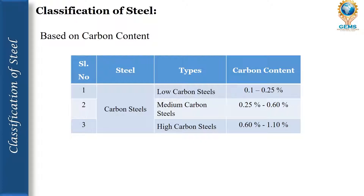Based on the carbon content present in iron, steels are divided into three types. If the carbon content lies between 0.1 to 0.25 percent, we call it low carbon steel. If it lies between 0.25 to 0.6 percent, we call it medium carbon steel. If it lies between 0.6 percent to 1.1 percent, we call it high carbon steel.